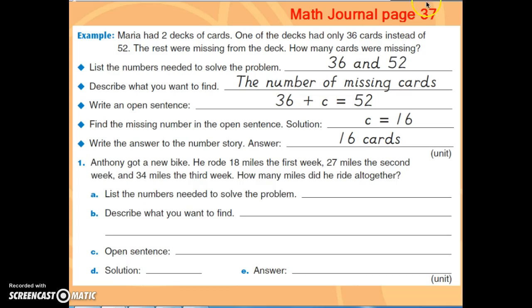So the first question is asking, list the numbers needed to solve the problem. Well, there's three numbers in this story problem. We have two decks of cards, 36 cards, and 52. We really want to find out how many cards were missing. So the only numbers we need are 36 and 52. It doesn't matter that there were two decks of cards.